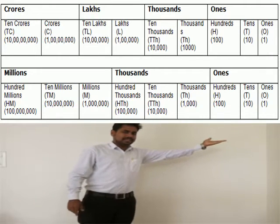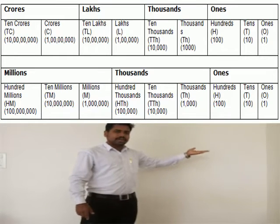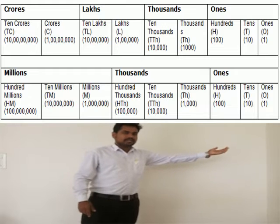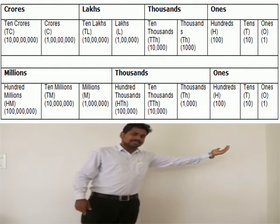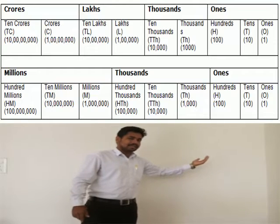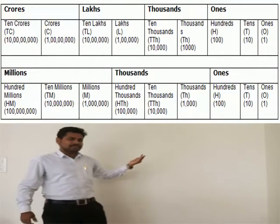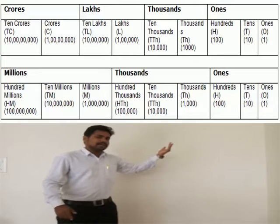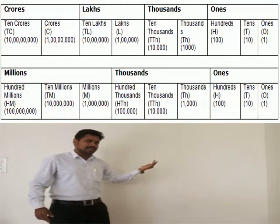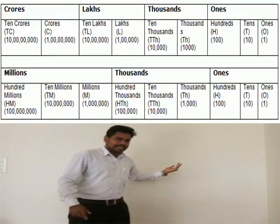Now if we are talking about the international place value — in the international system, the same place values apply: ones, tens, hundreds, thousands, ten thousands. But after ten thousands, it comes hundred thousands, and after hundred thousands comes millions. In the millions period: million, ten millions, then hundred millions — and it goes on like this.